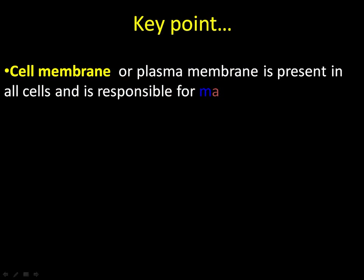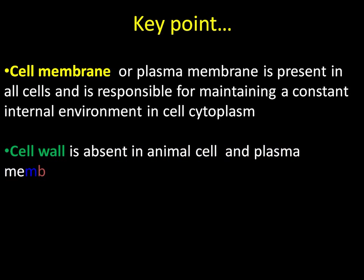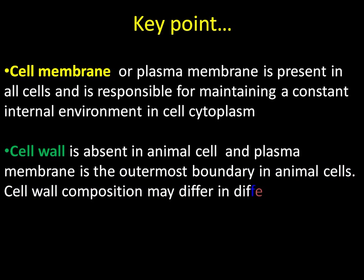Cell membrane, or plasma membrane, is present in all cells and is responsible for maintaining a constant internal environment in cell cytoplasm. A cell wall is absent in animal cells, and plasma membrane forms the outermost boundary in the case of animal cells.